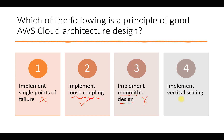Vertical scaling means increasing resources on a single machine — for example, increasing CPU from 2 to more. Horizontal scaling means adding another instance of the same type, either increasing or decreasing the count. We always prefer horizontal scaling because vertical scaling creates a single point of failure — if something goes wrong with that one machine, the whole system goes down. With two machines, if one goes down, the second stays up. So vertical scaling is not good architecture, and the correct answer is implement loose coupling.